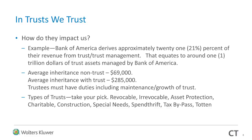Look at the types of trusts we have: revocable, irrevocable, asset protection, charitable, construction, special needs, spendthrift, tax bypass, totten trusts, and more. Just like we've seen a proliferation of different types of corporations and LLCs, we are truly seeing a proliferation of different types of trusts, which increases the likelihood that we will be dealing with them in our UCC world.